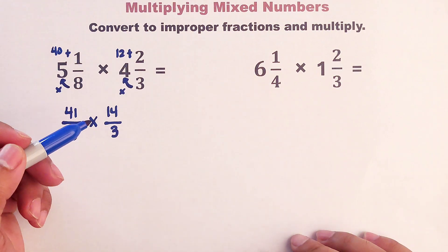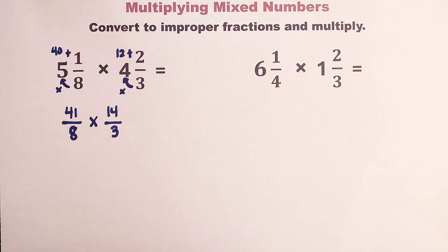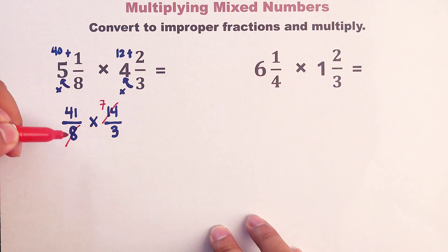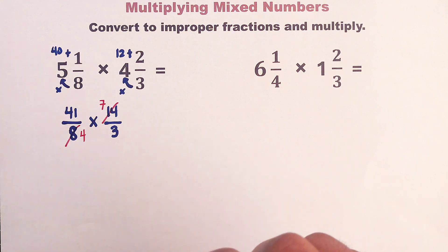So right now, we can multiply these numbers, but we can simplify some of it or we can use cancellation. This 14 can be simplified as 7. This 8 can be simplified as 4. Now, we can multiply these numbers.